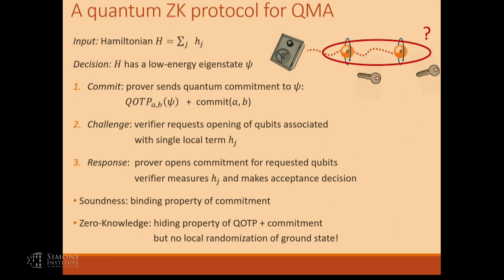This protocol is sound — the commitment is binding and hiding. But let's talk about zero-knowledge. The original commitment reveals no information — the quantum one-time pad perfectly hides the quantum information. The problem is about the last trick we used in GMW — the randomization of the colors. In this protocol, the verifier still does two things: it gets to choose what edge it opens, and second, it gets to choose how it looks at it. Because the prover opened the commitment, the verifier sees the state in clear and in principle should make a certain measurement, but in practice it can do something else. That measurement may reveal more information about the quantum state.